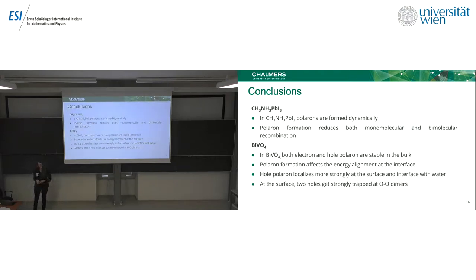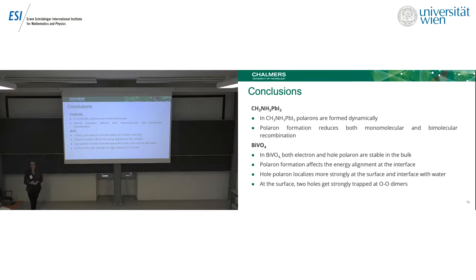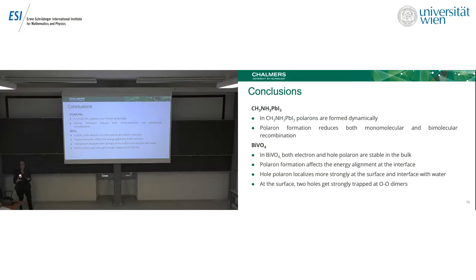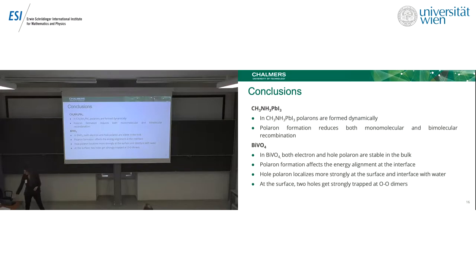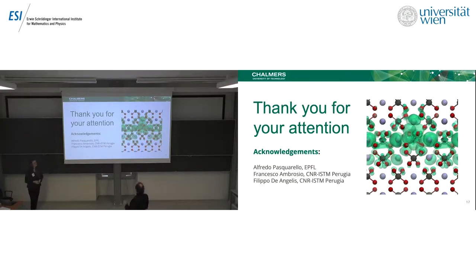In summary: in metal ammonium lead iodide, we have polarons of medium size that are only formed when we introduce dynamical degrees of freedom, and they can explain why charges do not recombine much in this material. In bismuth vanadate, we found both electron and hole polarons that can affect energy alignment at the interface. We find different types of polarons in the bulk and at the surface, and we can expect some charging of the interfaces due to formation of dimers in bismuth vanadate. Thank you for your attention.